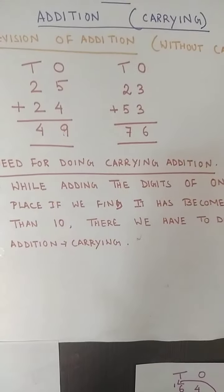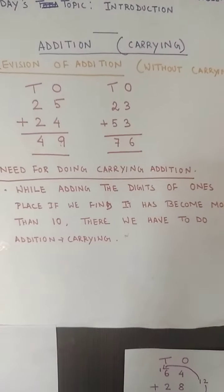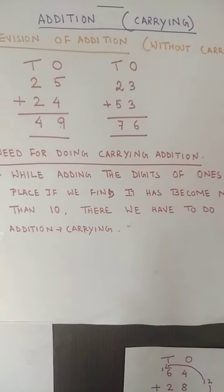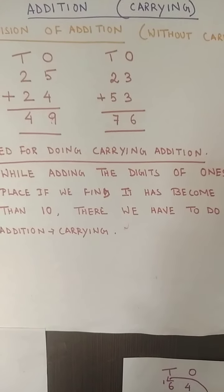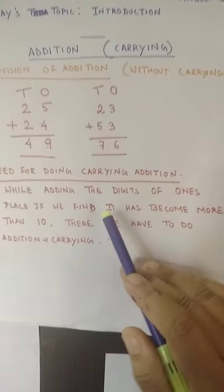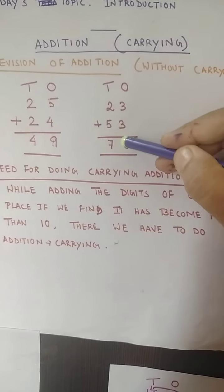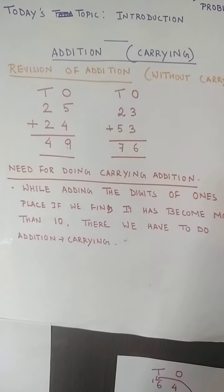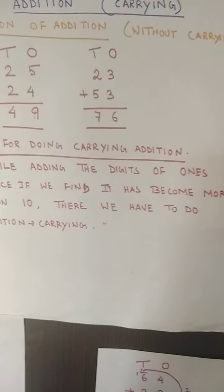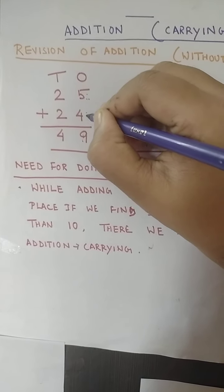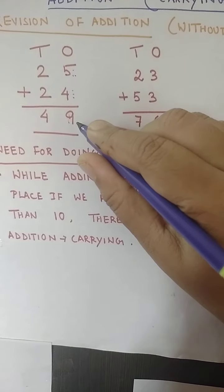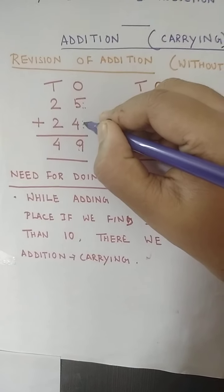Today we move on to the next part — addition with carrying. Before I do that, I want to tell you why we need carrying addition. Simple addition we can do, so why would we shift to this harder thing? While adding, we first have to add the digits of the ones place. Now, one thing you may have noticed: whenever I am adding these two digits, every time the answer is below 10.